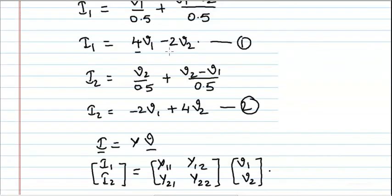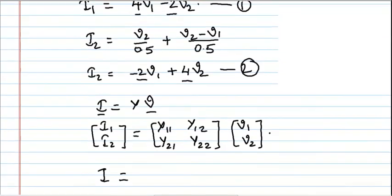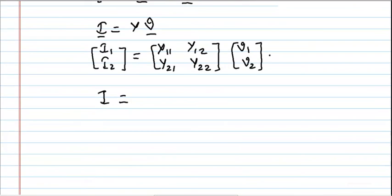From these equations 1 and 2, we can simply see that the constants 4, minus 2, minus 2, 4 are nothing but Y11, Y12, Y21, and Y22. So this matrix is the required short circuit admittance matrix.